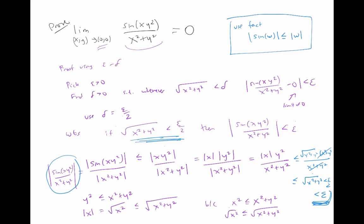Notice that both proofs — the one using polar coordinates and the epsilon-delta proof — rely on the fact that the absolute value of sine of something is less than or equal to the absolute value of that thing itself.